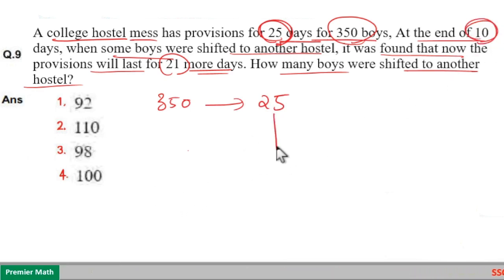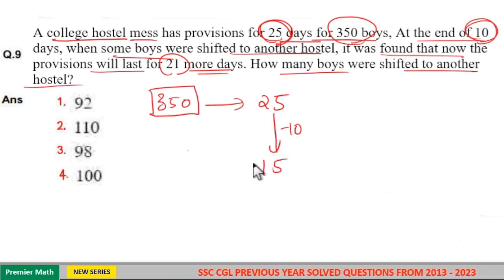Now, at the end of 10 days means after 10 days, remaining days are 15 days, which means for 350 boys after 10 days, food will last for 15 days.